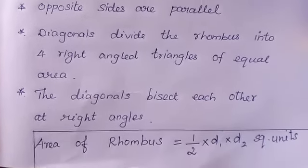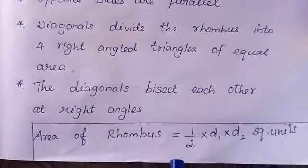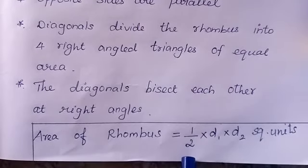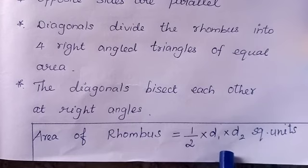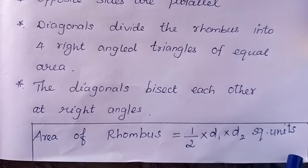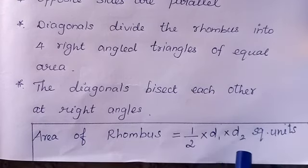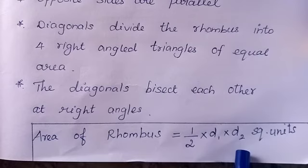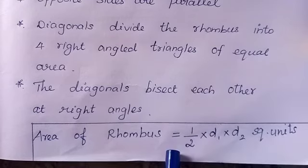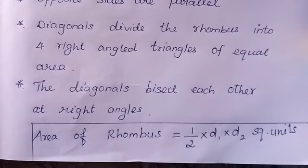The formula for the area of a rhombus equals half × d1 × d2 square units, where d1 and d2 are the diagonals of the rhombus. The derivation of this formula is given in your book — please go through that.